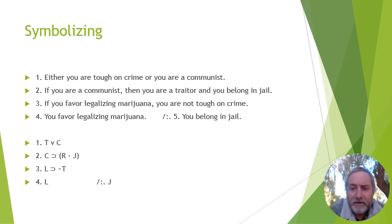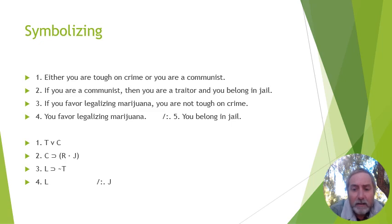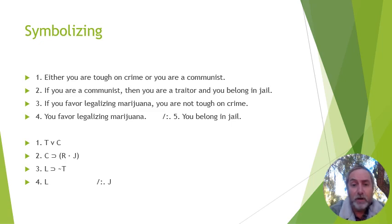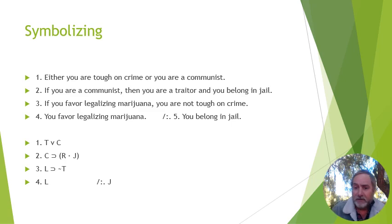Here's how I'd translate this, step by step. Premise one: the only operators are 'either/or' — no nots, ifs, or ands — so it's simply a disjunction. Left disjunct: you are tough on crime (T). Right disjunct: you are a communist (C). So premise one translates as T or C.